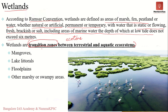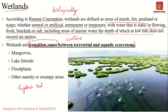The important factor that distinguishes wetlands from other land forms or water bodies is the characteristic vegetation of aquatic plants that are adapted to a unique hydric soil — a soil saturated by water resulting in anaerobic conditions. However, the most important factor when it comes to wetlands is that they are considered the most biologically diverse of all ecosystems, serving as a home to a wide range of plants and animals.